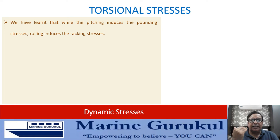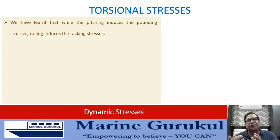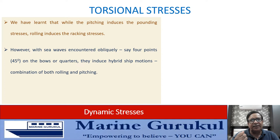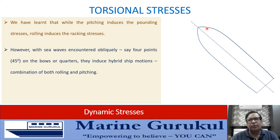Torsional stresses: when a vessel encounters head seas, pitching is induced and pounding stresses arise. Beam seas induce rolling and raking stresses. However, when seas are encountered obliquely — say four points on the bow or quarter — they induce a hybrid motion of both rolling and pitching, as the seas are neither from right ahead nor from the beam.